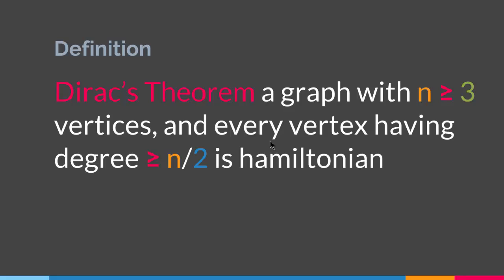Dirac's theorem is another theorem that provides a sufficient condition for a graph to be Hamiltonian. It states that a graph with n greater than 3 vertices and every vertex having degree greater than half of the number of vertices is Hamiltonian. However, the absence of this condition will not cause the graph to not be Hamiltonian, but the presence of this condition is sufficient for the graph to be Hamiltonian. And with this, we come to the end of this lecture.